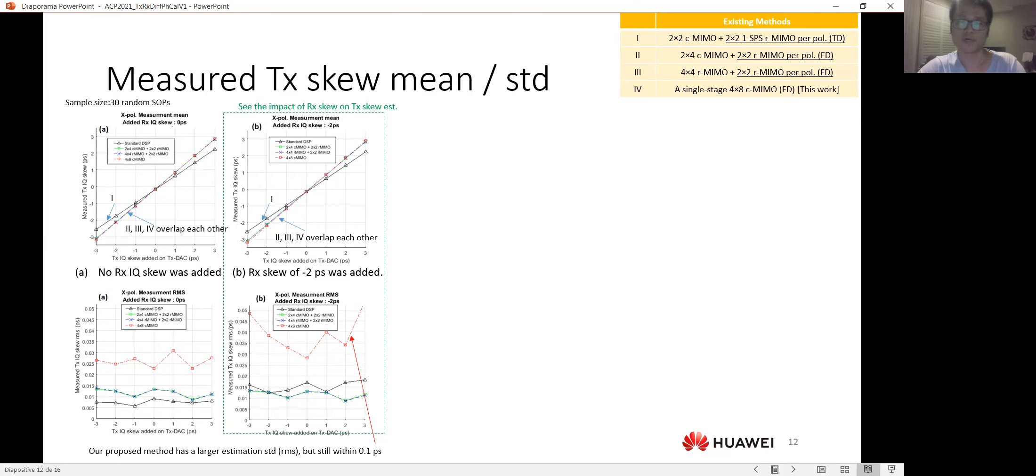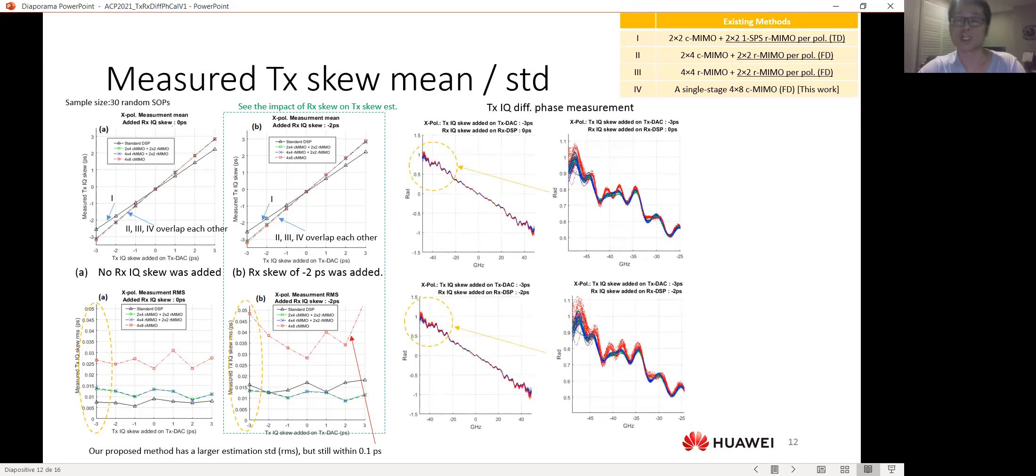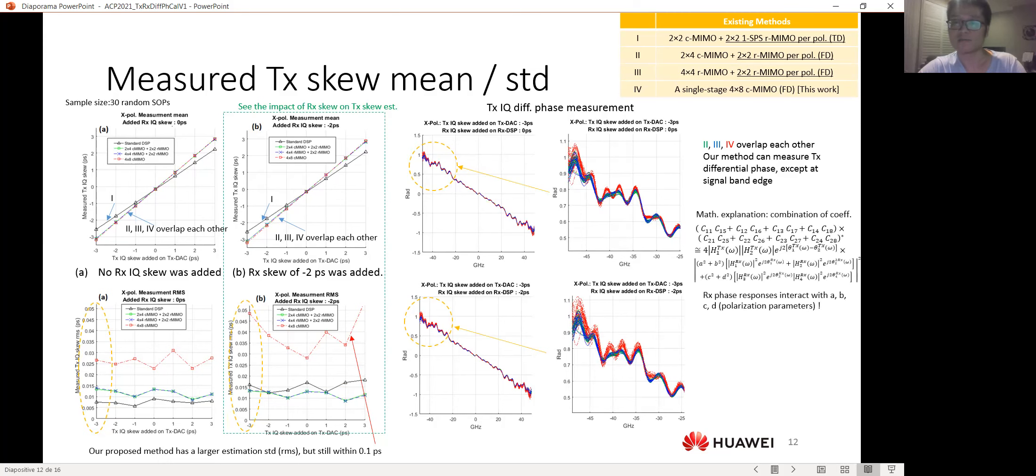In order to understand why our methods suffer from a higher variance, we just pick an extreme case, an extreme case which is minus 3 picoseconds at the transmitter skew. Then we plot all the differential phase over 30 SOPs, and the red curve shows our results. And basically, our results aligned with other methods results, except at the band edges. And we see higher fluctuation at the high frequency ends.